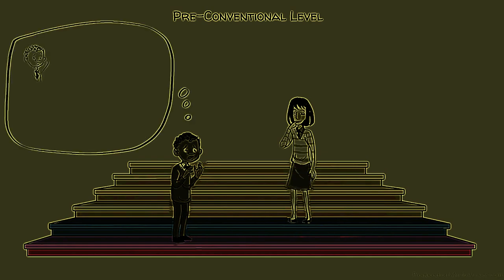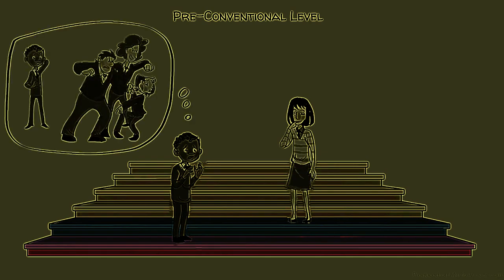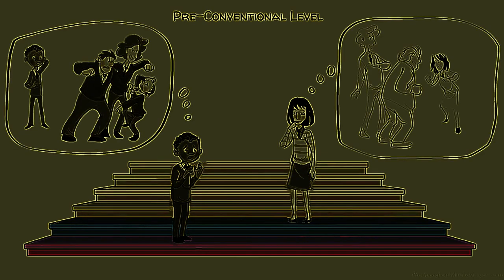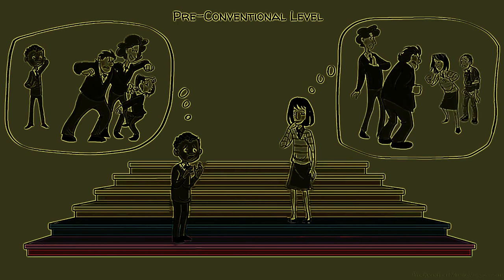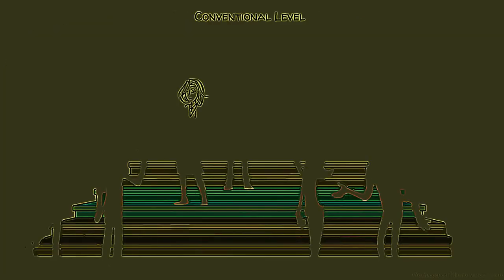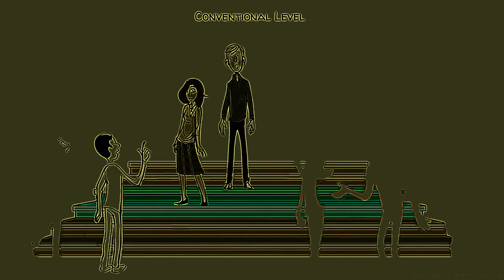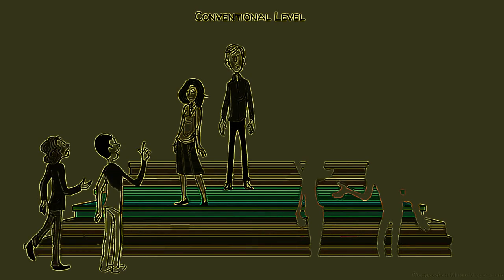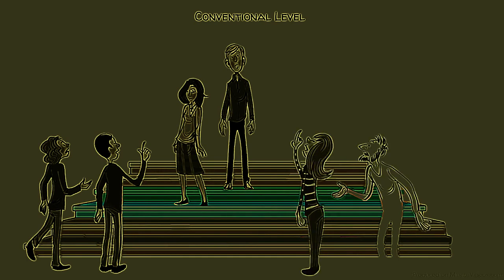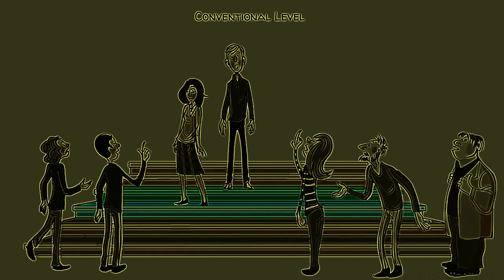At the pre-conventional level, Finn is driven by fear and Mary by self-interest. Both judge what is right or wrong by the direct consequences they expect for themselves, and not by social norms. This form of reasoning is common among children. At the conventional level, Betty responds to peer pressure and the teacher follows the rules. Their morality is centered around what society regards as right. At this level, the fairness of rules is seldom questioned. It is common to think like this during adolescence and adulthood.